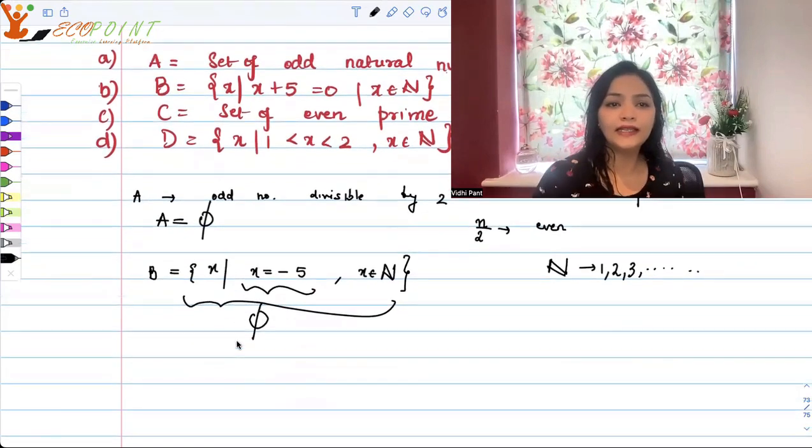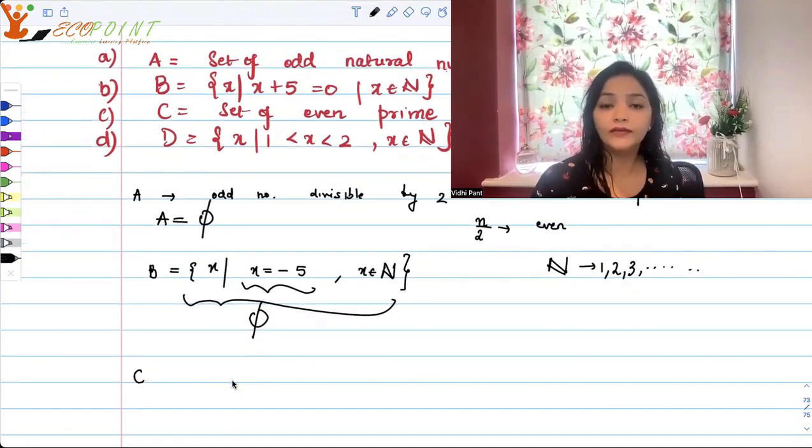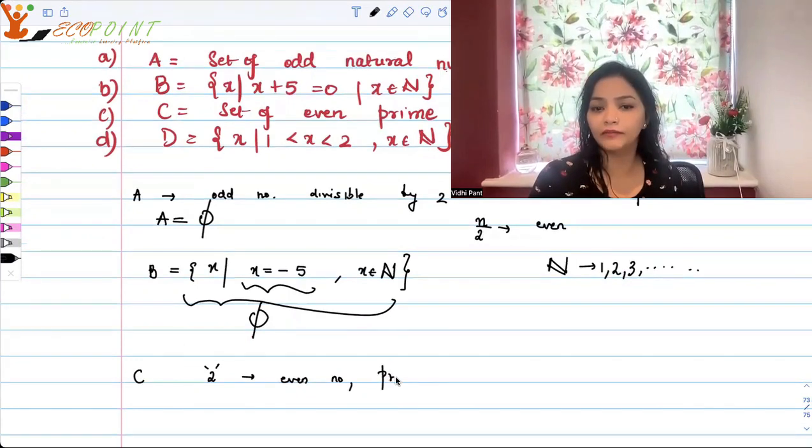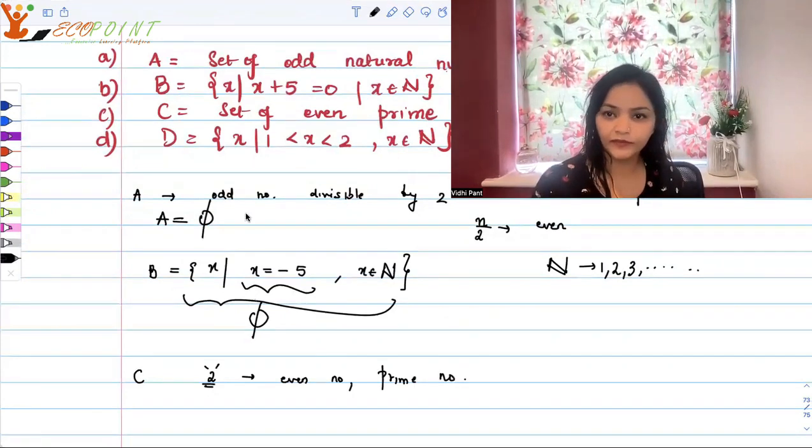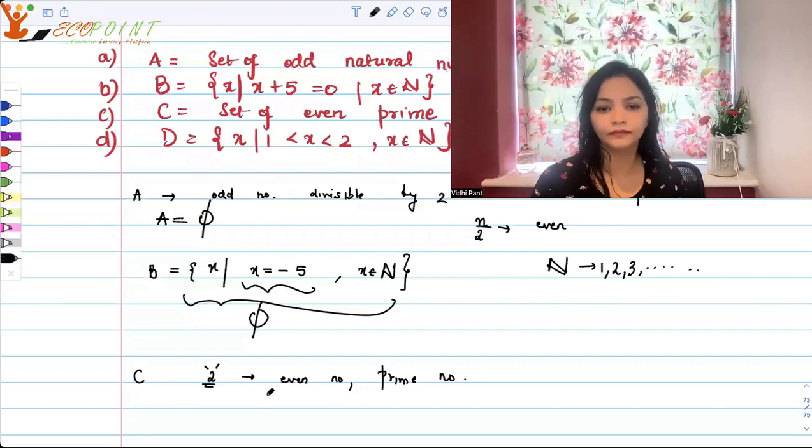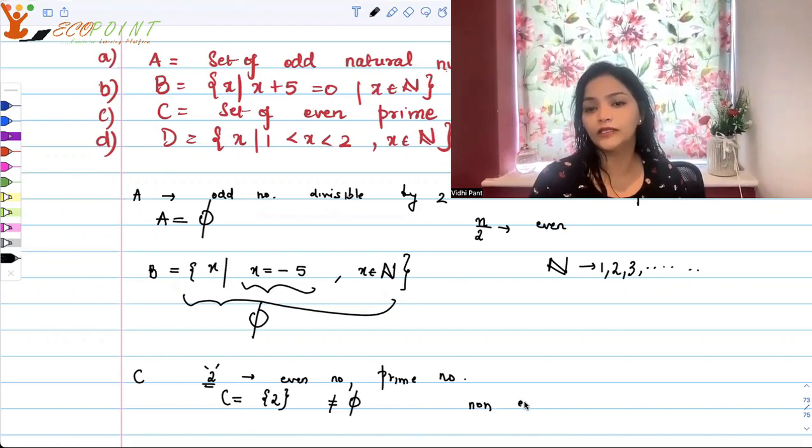Set C is the set of even prime numbers. Do we have any prime number which is even? The first thing that should probably come to mind is 2. 2 is an even prime number. So 2 is that number which will definitely be in this set. In fact, that's the only one. So C actually is a set that contains 2 which is not empty. So this set, my dear friends, we will call this non-empty.